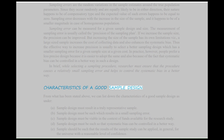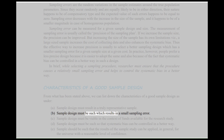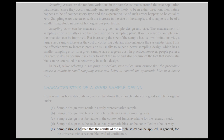Characteristics of a good sample design: From what has been stated above, we can list down the characteristics of a good sample design as under. A. Sample design must result in a truly representative sample. B. Sample design must be such which results in a small sampling error. C. Sample design must be viable in the context of funds available for the research study. D. Sample design must be such so that systematic bias can be controlled in a better way. E. The sample should be such that the results of the sample study can be applied, in general, for the universe with a reasonable level of confidence.